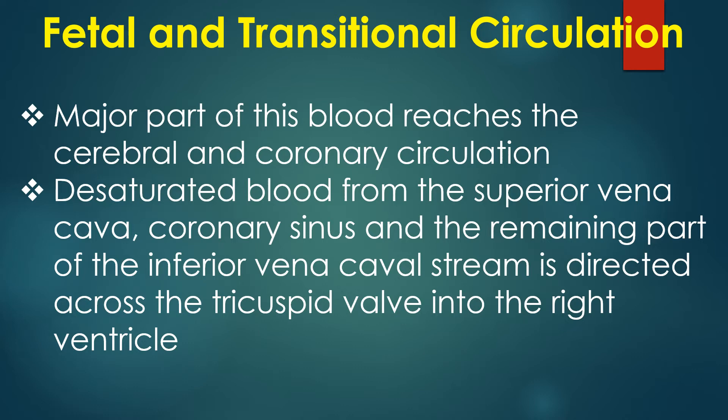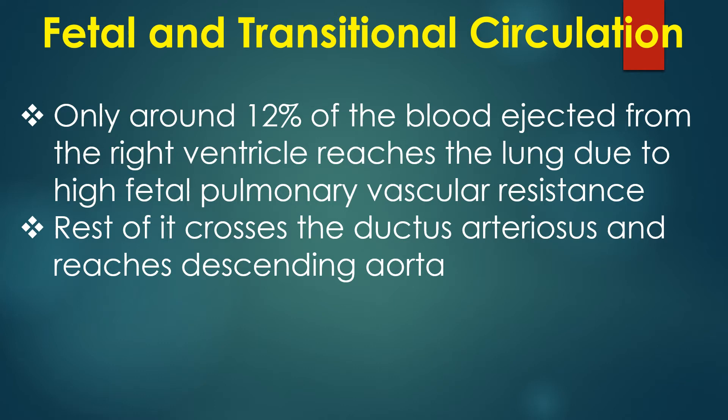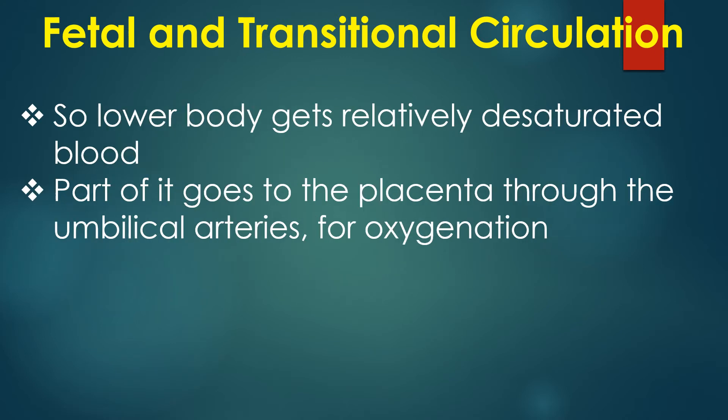Desaturated blood from the superior vena cava, coronary sinus, and the remaining inferior vena cava stream is directed across the tricuspid valve into the right ventricle. Only around 12 percent of the blood ejected from the right ventricle reaches the lungs due to high fetal pulmonary vascular resistance. The rest crosses the ductus arteriosus and reaches the descending aorta, so the lower body receives relatively desaturated blood. Part of it goes to the placenta through the umbilical arteries for oxygenation.